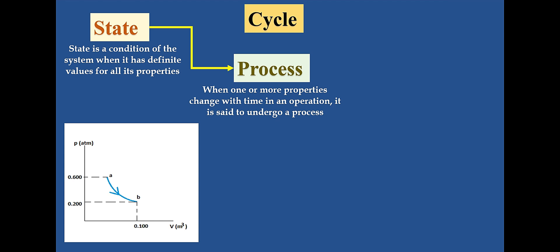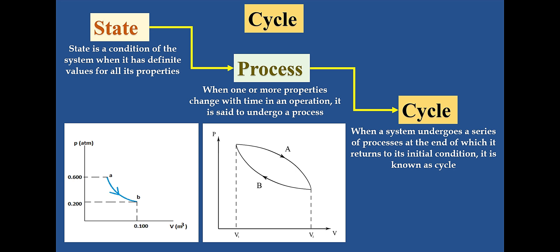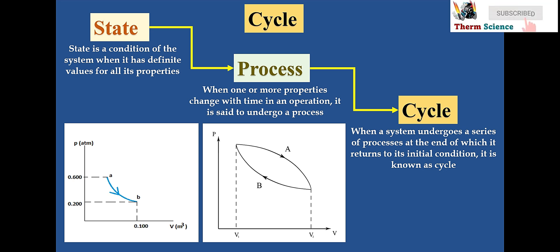From the graph, initially the system was at state A with 0.6 atmospheric pressure and undergoes an expansion process to state B with 0.2 atmospheric pressure and 0.1 meter cube of volume. So the system has undergone a change from state A to state B, and this is called a process. Now, let's understand cycle. When a system undergoes a series of processes and at the end the initial and final conditions are the same, this is said to be a cycle. And this cycle is repetitive in nature.